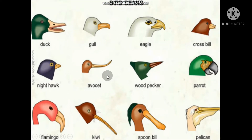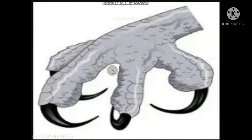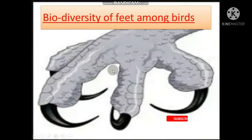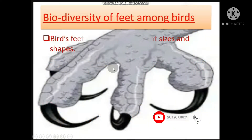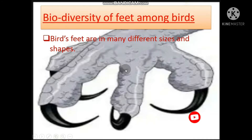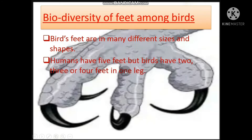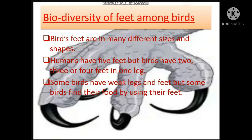This picture shows bird beak biodiversity. Biodiversity of feet among birds — birds' feet are in many different sizes and shapes. Humans have five toes, but birds have two, three, or four toes on one leg. Some birds have weak legs and feet, but some birds find their food by using their feet. Examples: hawk, eagle, and cock.